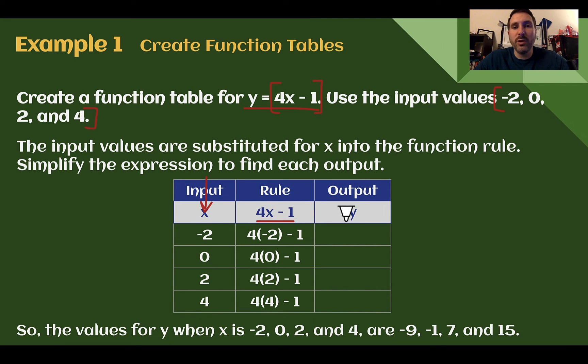When we substitute, we will get our outputs for y. If I input negative 2, I have to follow order of operations. So I would multiply by 4, then subtract 1. Most of the rules that you are going to see are going to multiply first, then add or subtract. Maybe you'll see ones with exponents. If you do, you would do an exponent first, then multiplication. But for now, we'll just multiply and subtract.